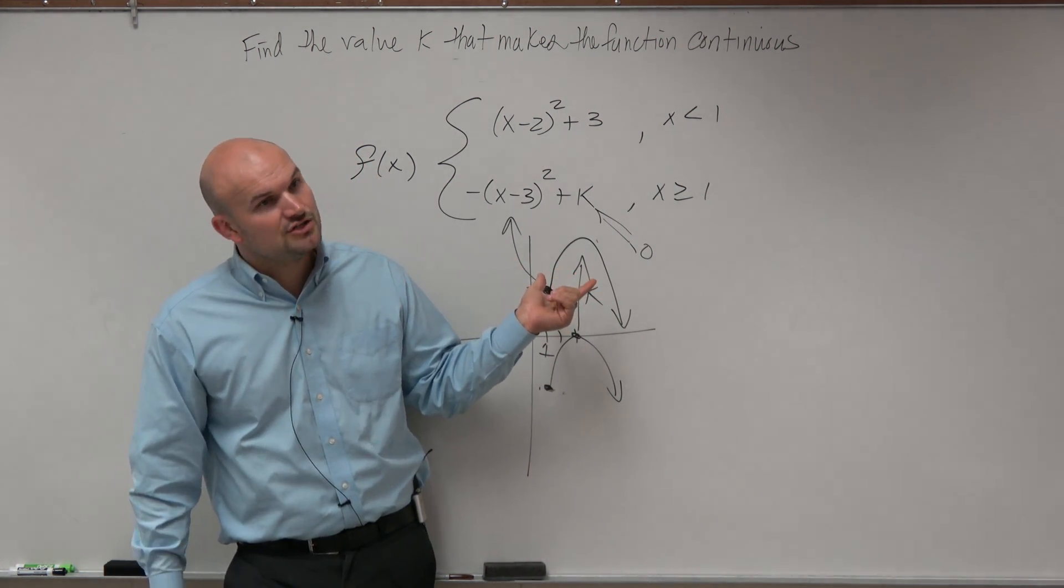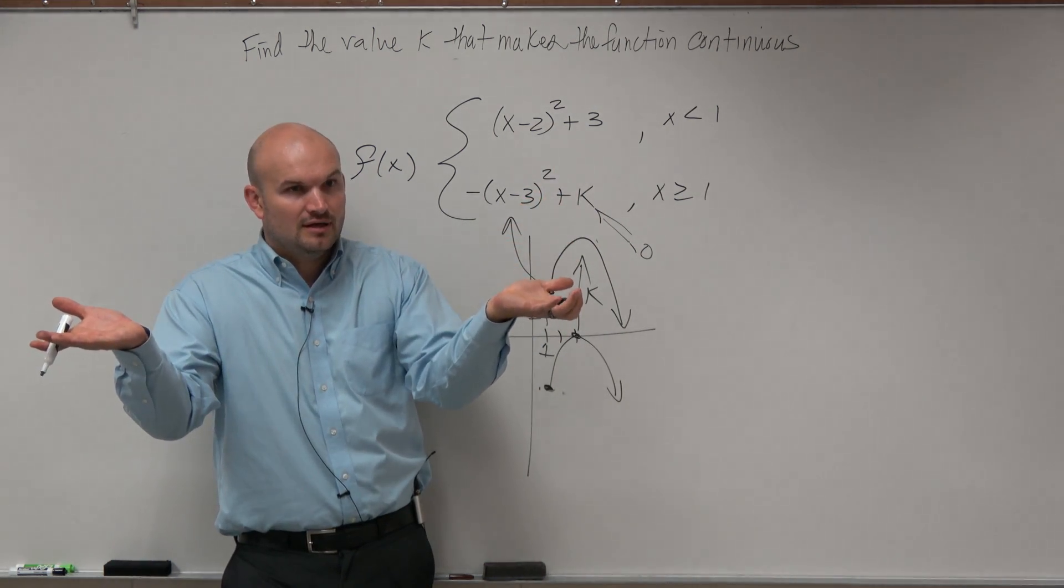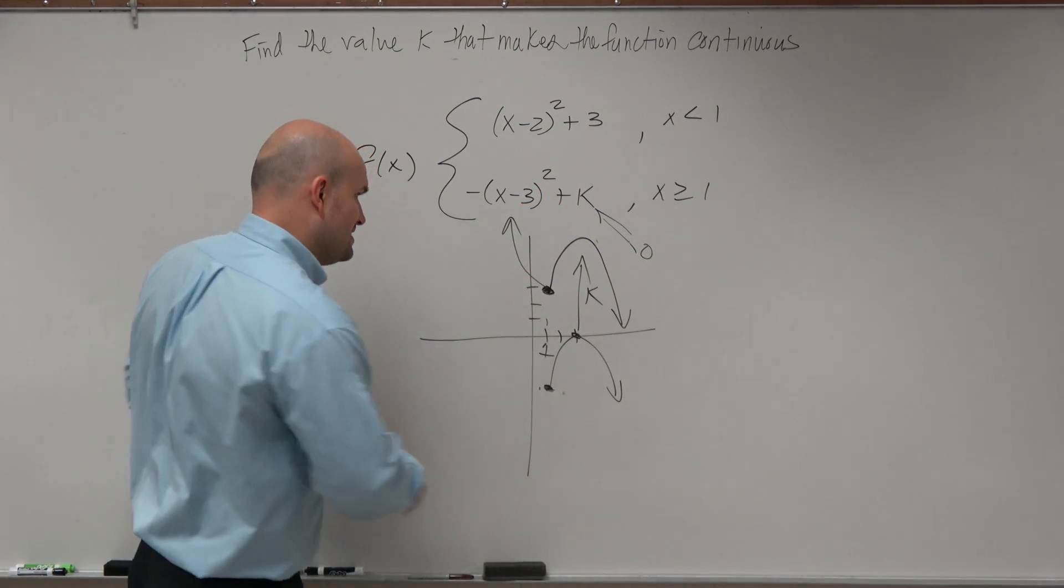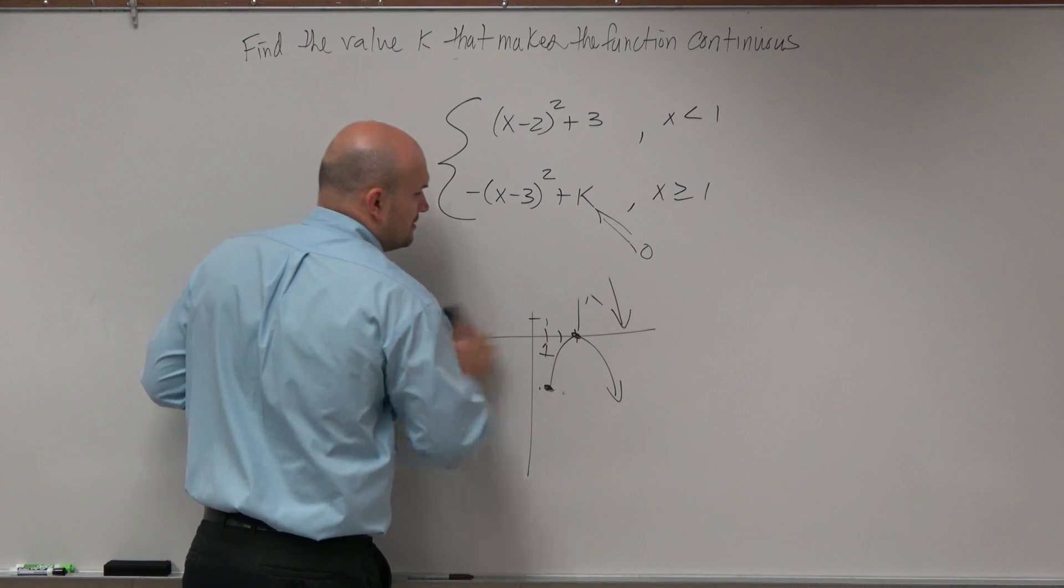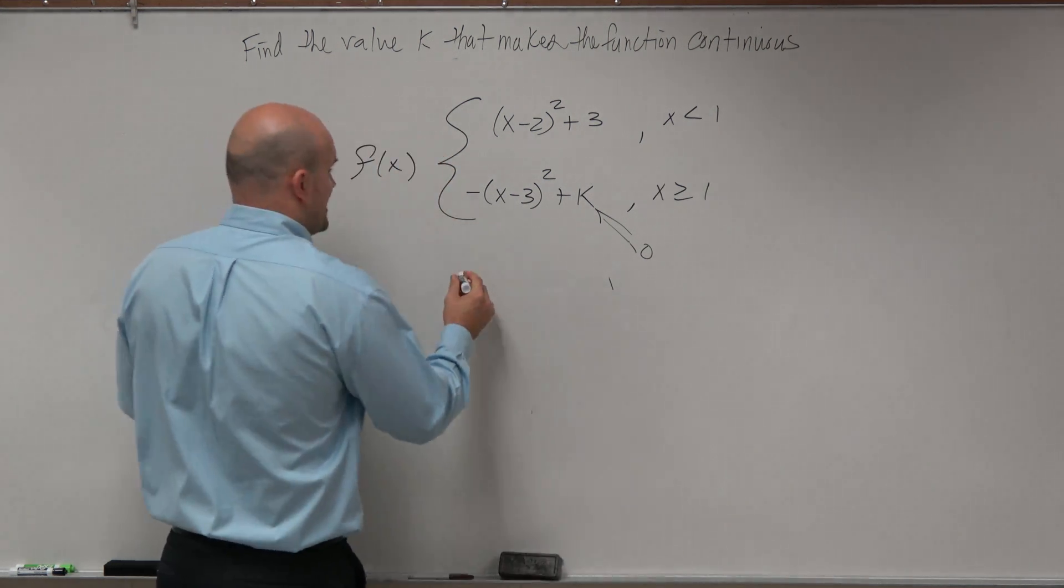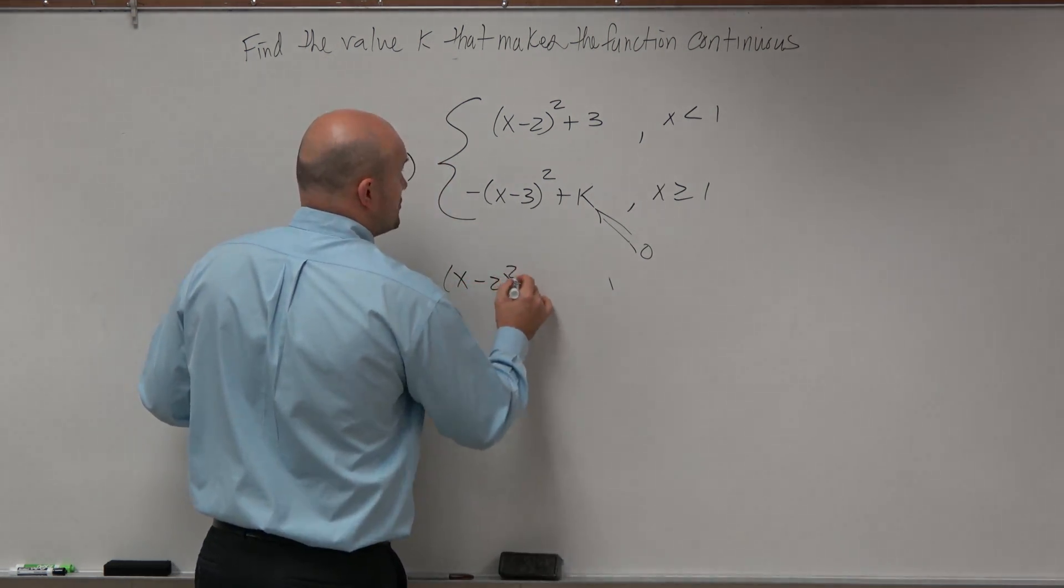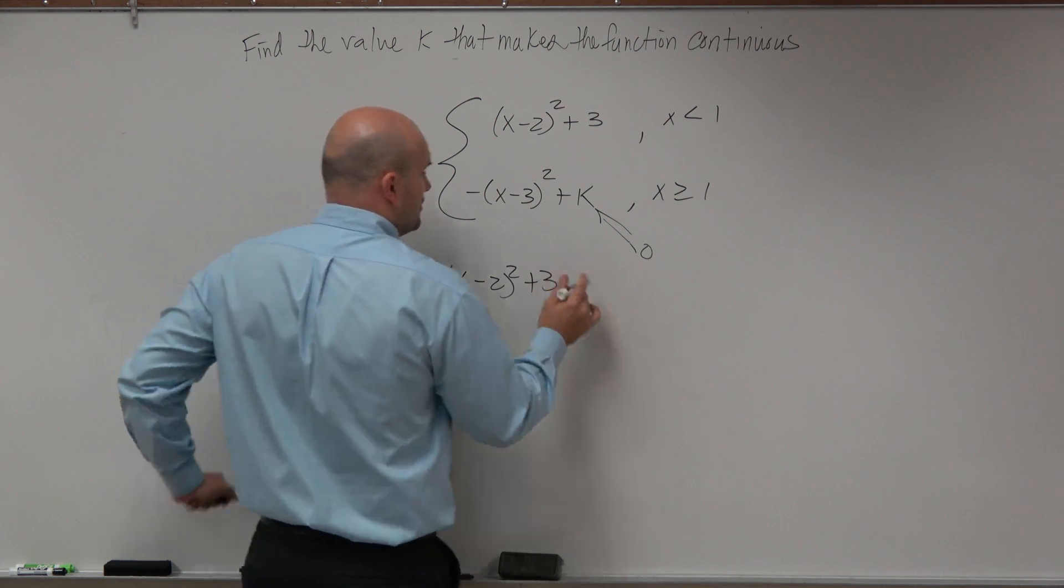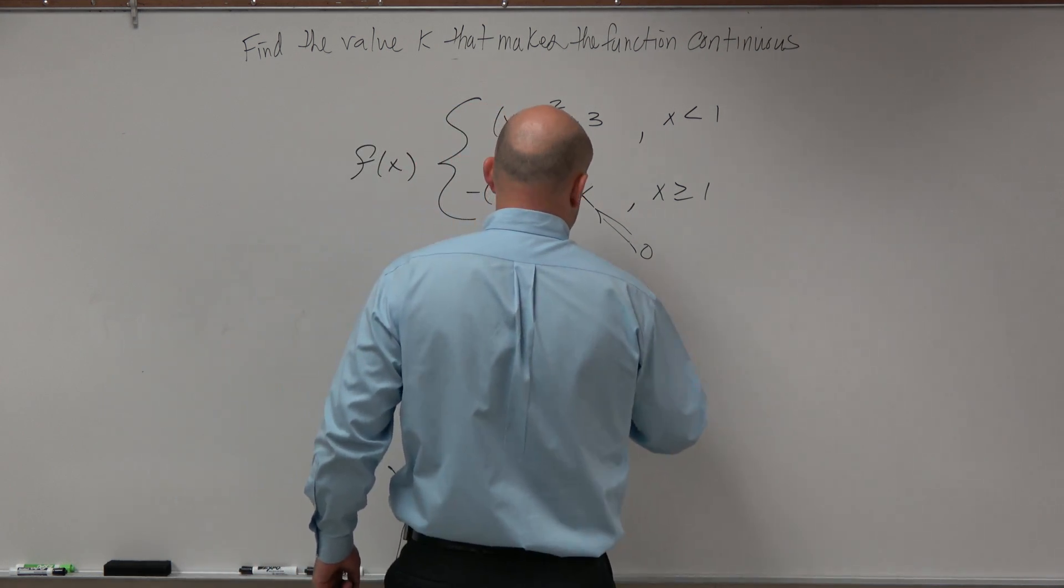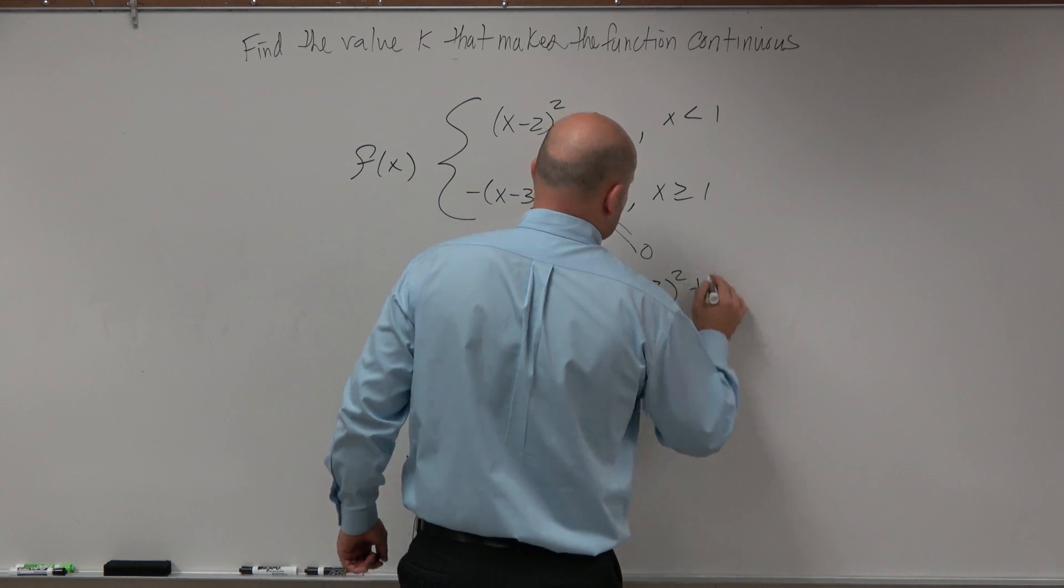So guess what? Algebraically, guys, when we know two quantities are equal, why don't we write an equation that represents that? At 1, we can say (x-2)² + 3 = -(x-3)² + k.